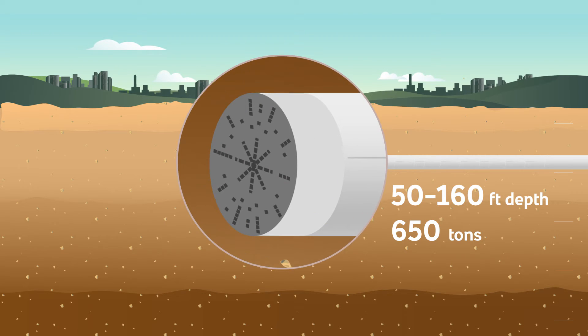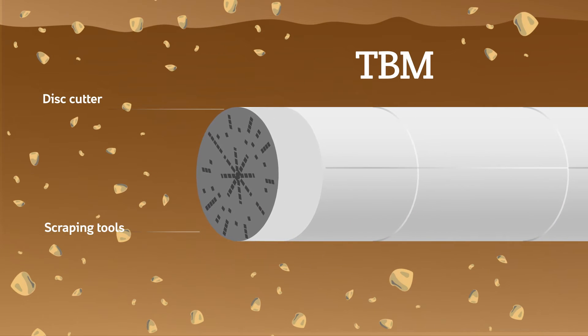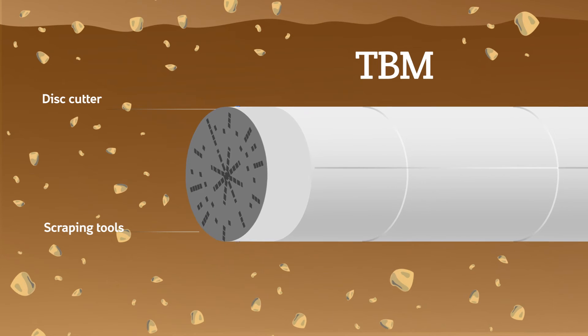The rotating cutting wheel breaks the underground material thanks to disc cutters and scraping tools, producing a smooth tunnel wall.